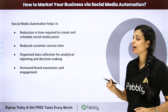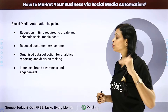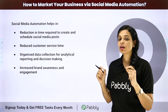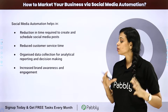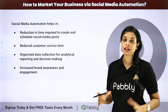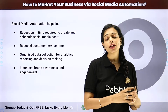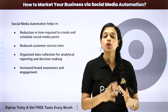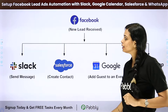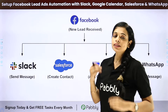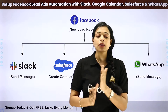It helps in reduction in time required to create and schedule social media posts, reduce customer service time, organized data collection for analytical reporting and decision making, and increased brand awareness and engagement. The amount of time and efforts that you save here, you can actually use that in creating a lot more engaging content. Now I am going to show you how you can use certain automations to help market your business in a much better way.